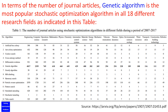Based on my research in terms of the number of journal articles, genetic algorithm is the most popular stochastic optimization algorithm in all 18 different research fields, as indicated in this table. Do you believe that? For more details, please have a look at the reference attached.